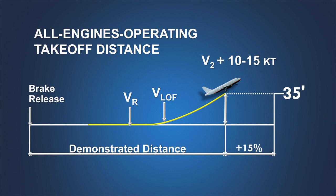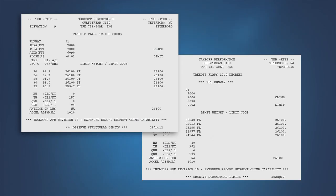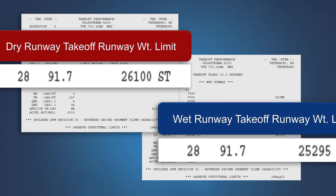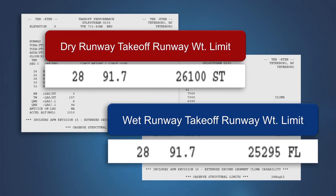The all-engines-operating takeoff distance screen height for a wet runway remains at 35 feet and still must include the 15 percent margin. In most cases, the maximum allowable takeoff weight on a wet runway will remain less than the allowable weight on a dry runway, even though the wet runway case includes credit for available reverse thrust and reduced screen height.